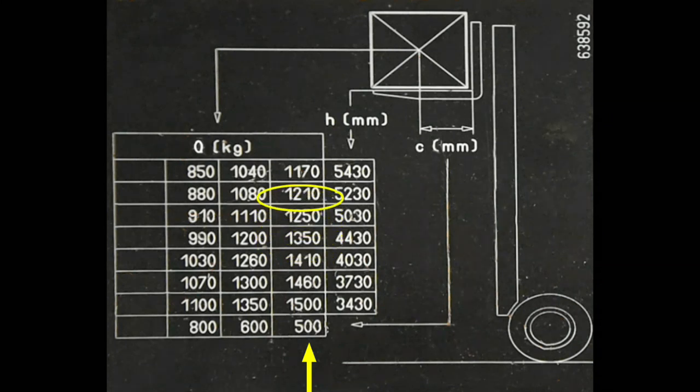In this case 5.43 meters, so at 5.43 meters with a 500 millimeter load center, this forklift truck's safe working load, or working capacity if you prefer, is 1170 kilograms.